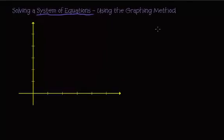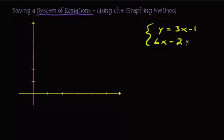Next example: solve the system y equals 3x minus 1, and 6x minus 2y equals 6. We're going to solve this using the graphing method, so we need to graph each line. Let's look at the first one in slope-intercept form.